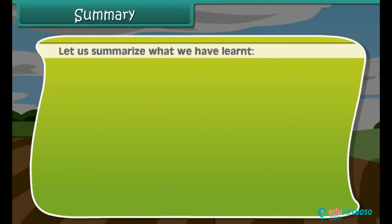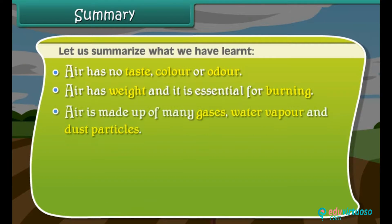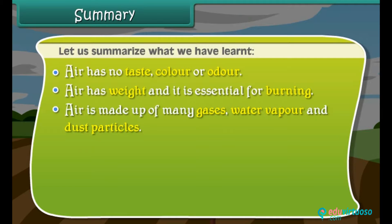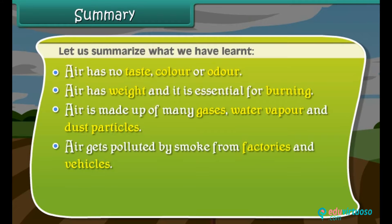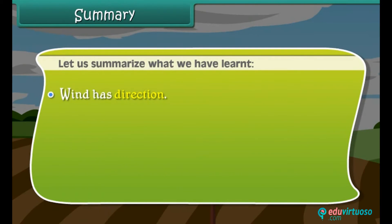Let us summarize what we have learned. Air has no taste, colour, or odour. Air has weight and it is essential for burning. Air is made up of many gases, water vapour, and dust particles. Air gets polluted by smoke from factories and vehicles. Breathing polluted air causes respiratory diseases. Moving air is known as wind, and wind has direction. Wind direction is determined with the help of a wind vane.